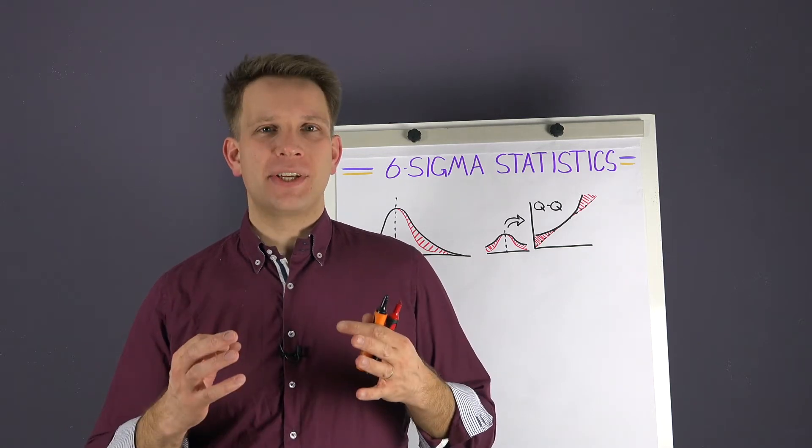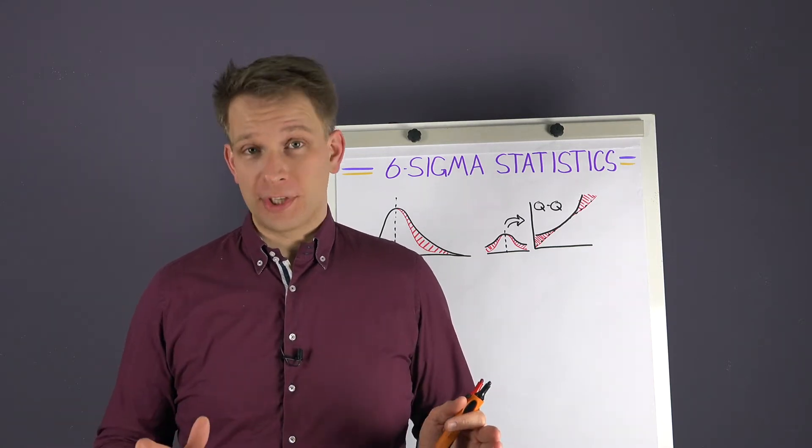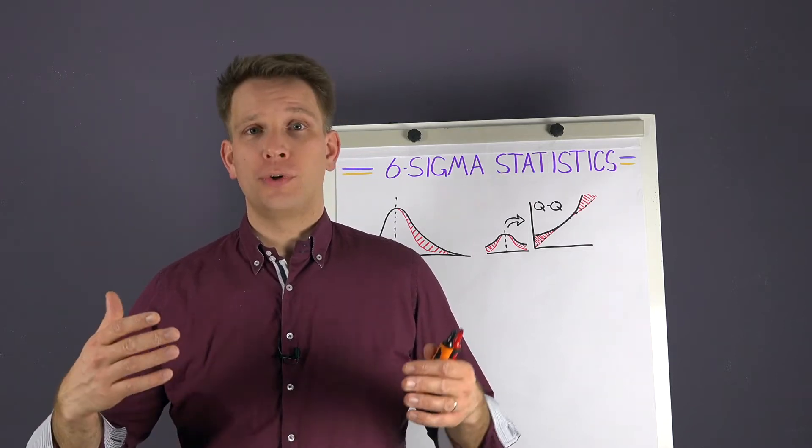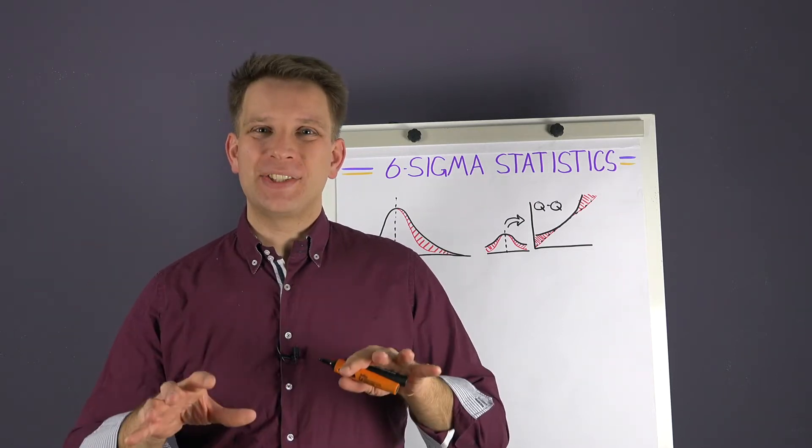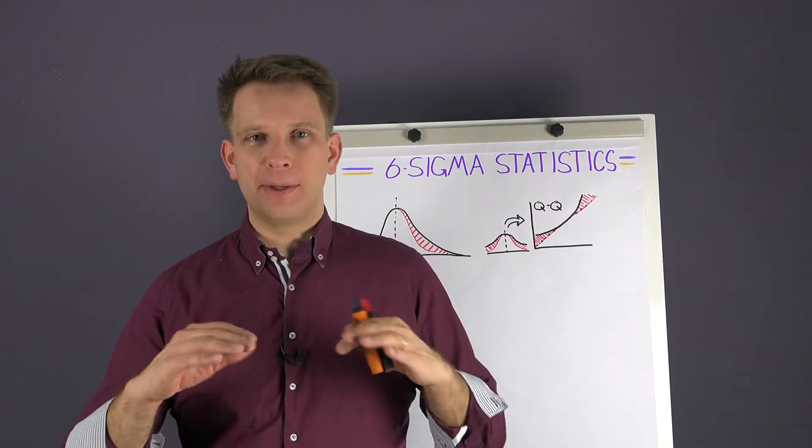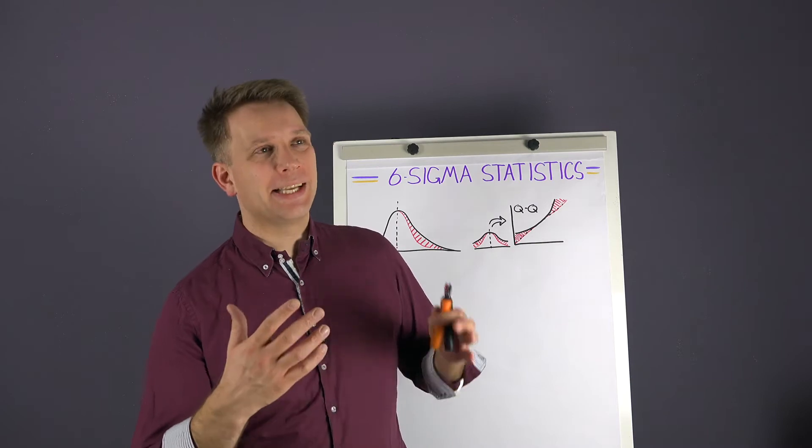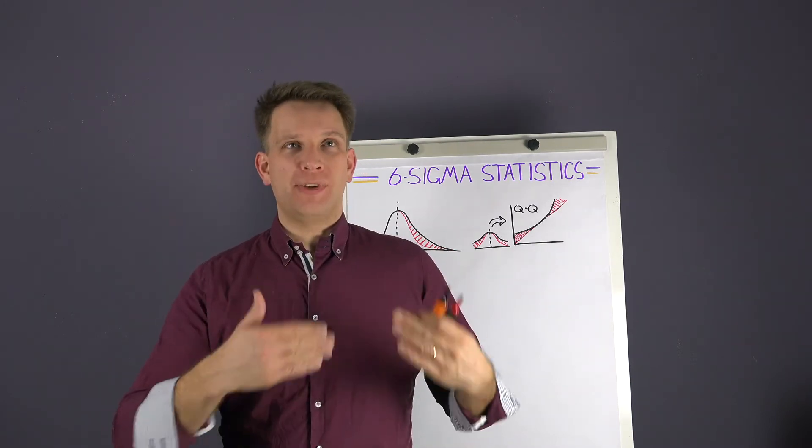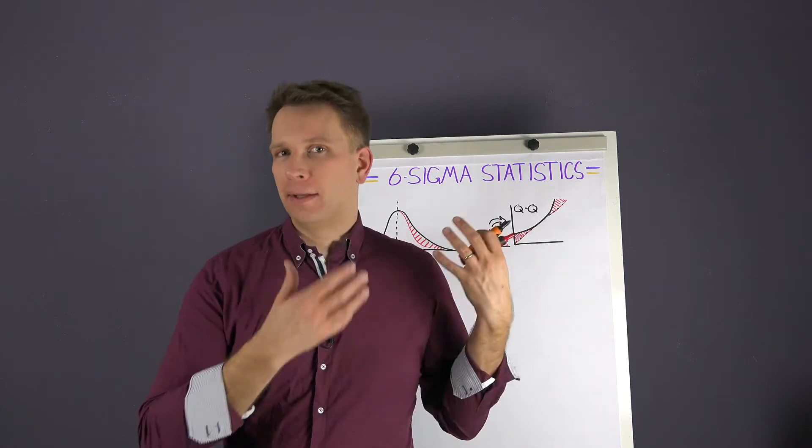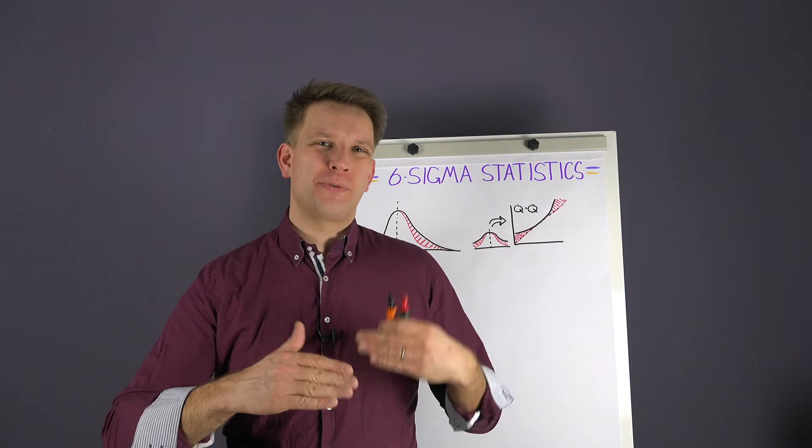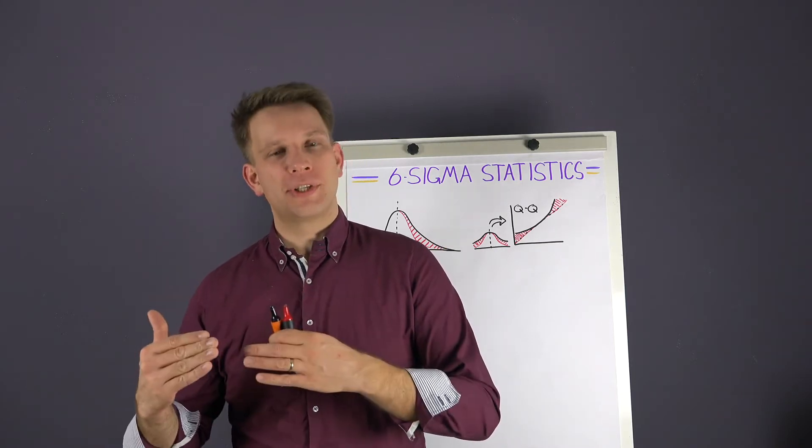So his basic message is don't learn all the statistics. What you really need are a control chart, statistic process control, histograms, basic distributive statistics, and a little bit of prediction. But then he says we do not really need things like skewedness or stratification. I'll add a test of normality to that. It's also a bit of the advanced level on top of Six Sigma.